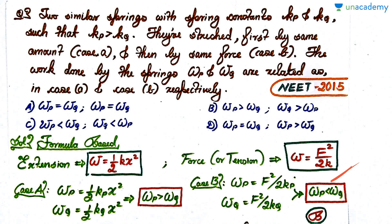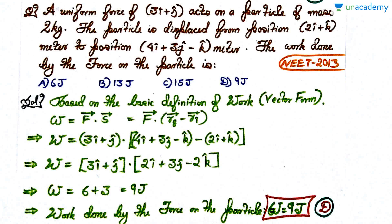For case A, one spring constant is K_P, the other is K_Q, and both are extended by same amount x. Since K_P is bigger than K_Q, you can clearly see that W_P is greater than W_Q. When the force or tension in them is constant, we use the F²/2K formula. When you find W_P and W_Q, since K_P is bigger, the denominator is greater for P, so the work of P will be smaller. W_P is less than W_Q, which gives you option B.